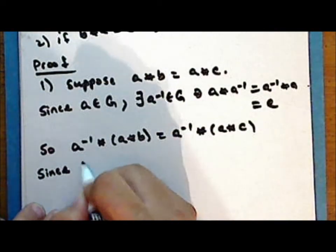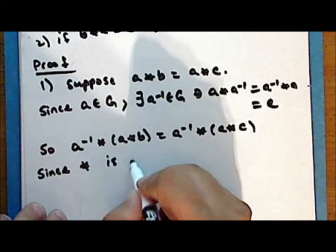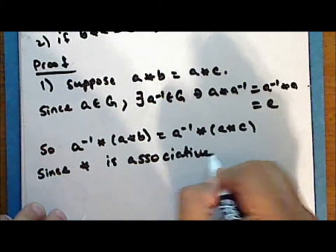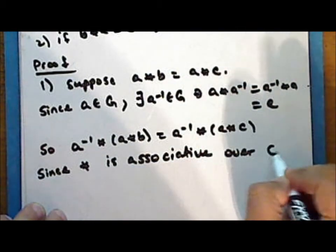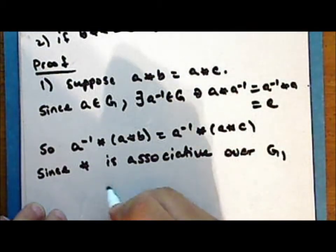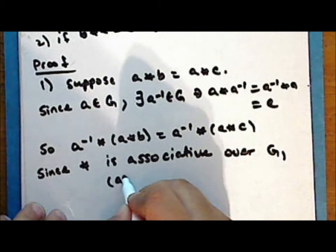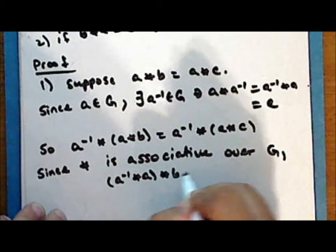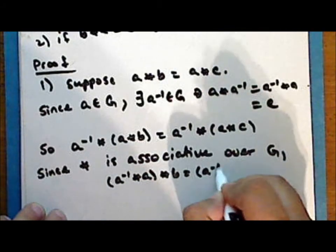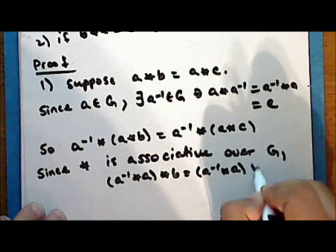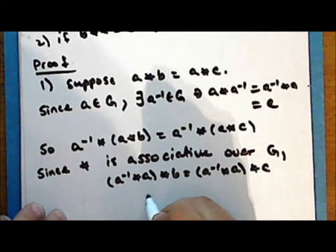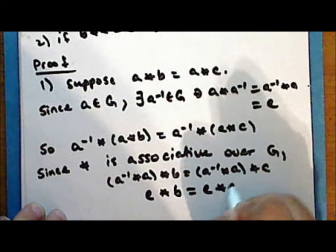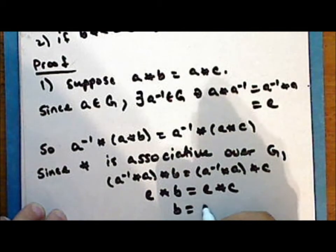Now since the operation star is associative over the underlying set G, we can regroup the terms so that (A-inverse star A) star B is equal to (A-inverse star A) star C, so that identity star B is equal to identity star C, or B is equal to C.